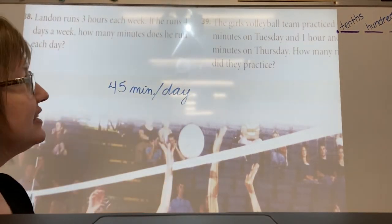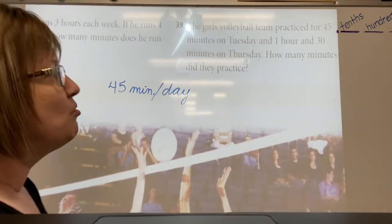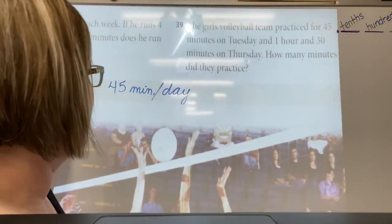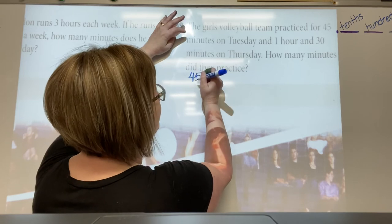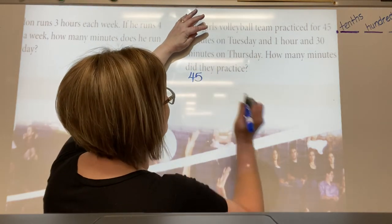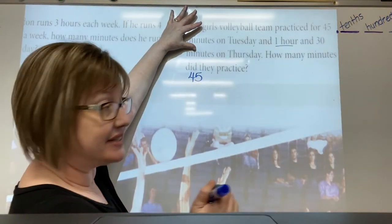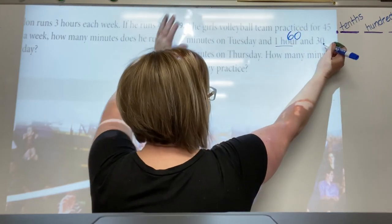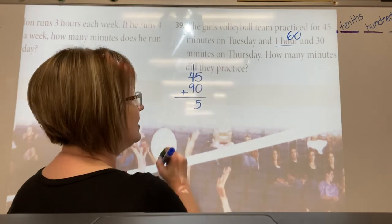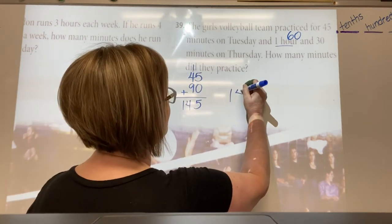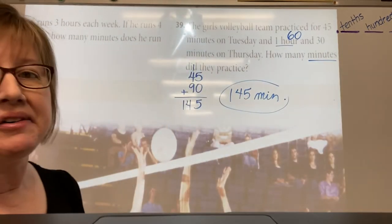Okay, and the last one. The girls volleyball team practiced 45 minutes on Tuesday, one hour and 30 minutes on Thursday. How many minutes did they practice? So 45 on Tuesday, an hour and 30 on Thursday. How many minutes is one hour? 60. So 60 and 30 equals 90, then 90 plus 45 equals 135 minutes.